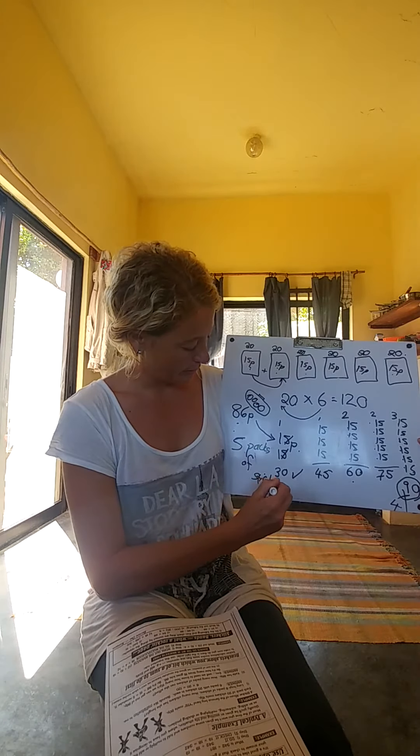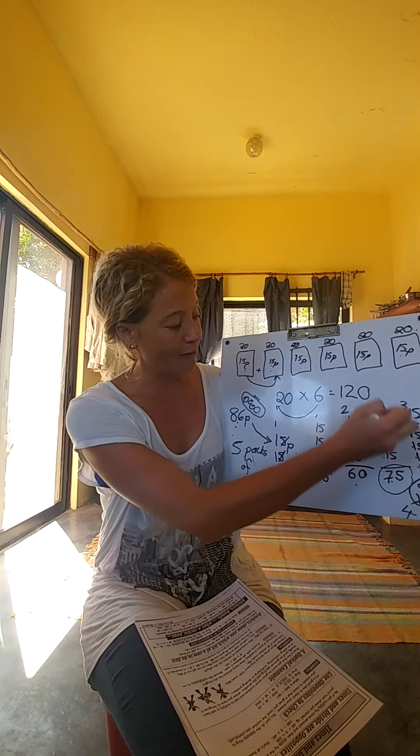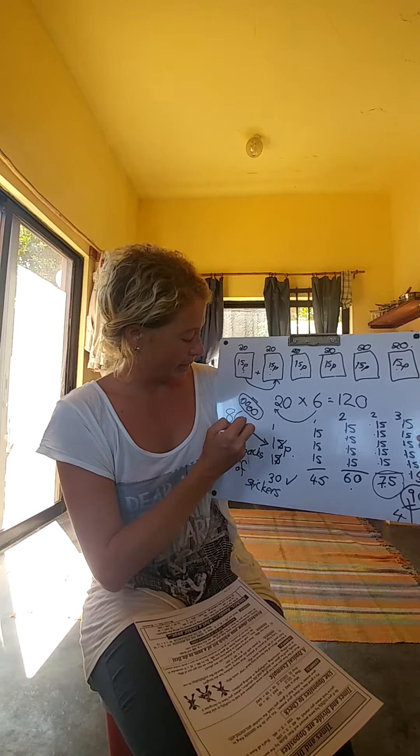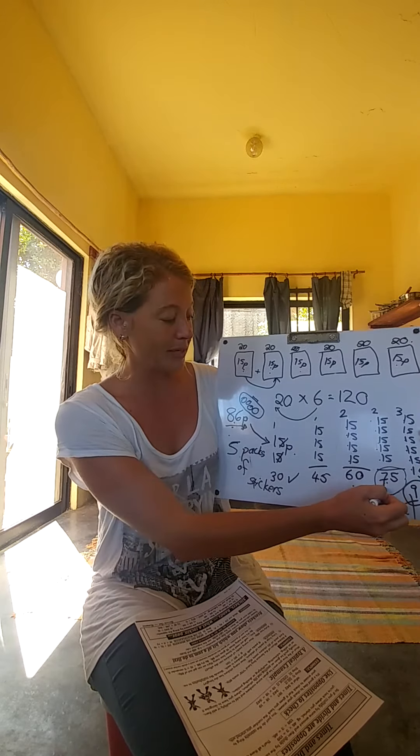And let's see — yes, 5. Remainder 11 it says here. 75 to 86: the difference between 75 and 86 is 11. So she could buy 5 packs. And if she has 86 pence and she's only spending 75, she has 11p left.